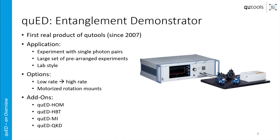The whole thing is designed to be in a lab-style setup, nothing fancy. Concerning the options, you can choose to upgrade from a low-rate version to a high-rate version. We specify at least 3000 coincidences in every basis for the high-rate version, which I would definitely recommend since it simplifies the alignment procedure, and if you're going to use add-ons it makes your life a whole lot simpler because you have a higher signal.